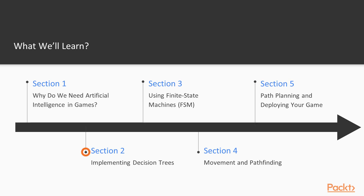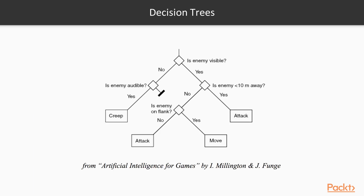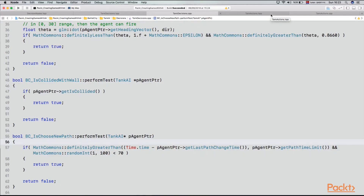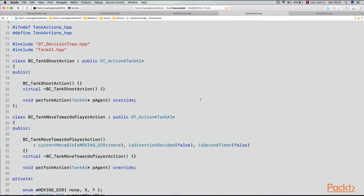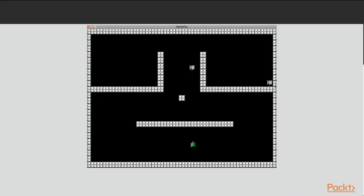In the second section, we will get closer to the real game AI decision-making process. We will talk about decision trees, how to use decision trees for deciding the general logic and behavior of a game agent, implement our generic decision tree class, and use and extend it for a battle-style-like game AI.